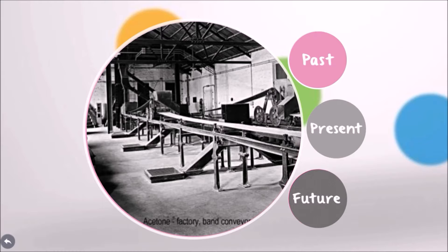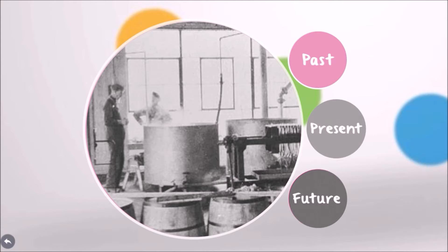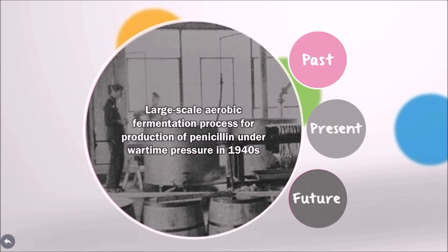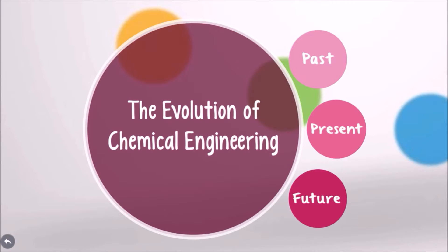Industrial Revolution led to an increase in the demand for quality and quantity of chemicals such as soda ash. Because of this, early advances in chemical engineering focused on the large-scale production of chemicals.